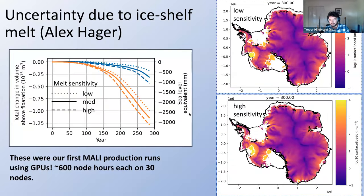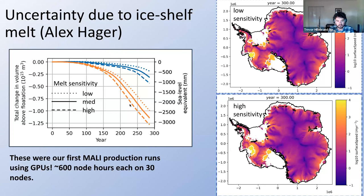We've also been using this model configuration to do sensitivity experiments outside of the ISMIP-6 protocol. Alex Hager, a postdoc in our group, led a sensitivity study of ice shelf melt to ocean temperatures and salinity, finding about a 15 to 40 percent difference relative to our baseline ensemble using the interquartile range of the melt tuning parameter. Notably, these are our first MOLLE production runs on GPU nodes—30 Perlmutter GPU nodes running an average of 20 wall-clock hours, about 600 node-hours each—a huge step forward for us.